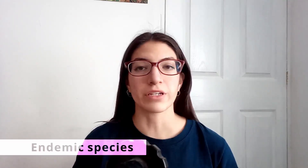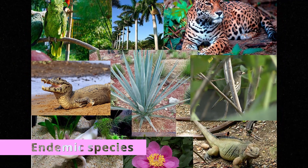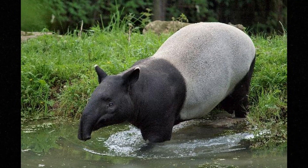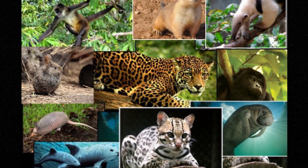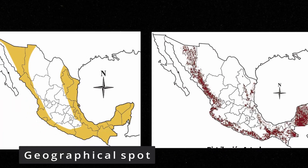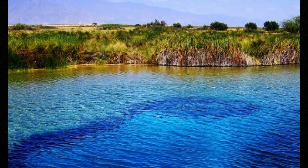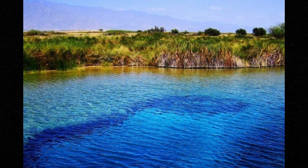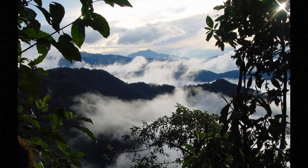Let's start with endemic species. These are those that live in a very specific geographic spot and they cannot survive in a different ecosystem. For a species to be considered endemic, it is important for them to fill the checklist. First of all, the geographic spot — it has to be a very specific river, lake, mountain or desert, and they cannot live in a different ecosystem.